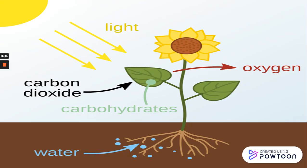تعالوا نبدأ — الصورة دي بمنتهى البساطة هنلاقي إن في plant. فيه الروots تحت وفيه water هنا. الروots دايم قلنا في الدرس اللي فات: the roots absorb water and nutrients. الواتر بيغدى الستام ويطلع للليف — وصل الواتر للليف.